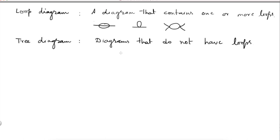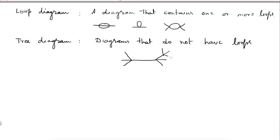For example, in phi-fourth theory, here is a tree diagram with four external lines. If you add more lines, it still remains a tree diagram — say, eight external lines. This contributes to a Green's function with eight fields, and it is a tree diagram because it does not contain any loops.